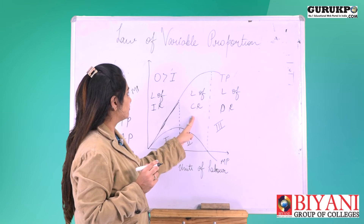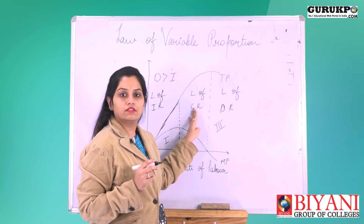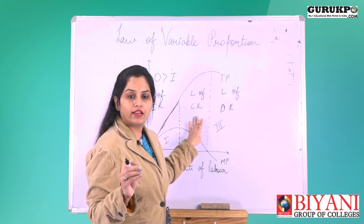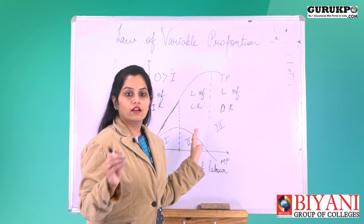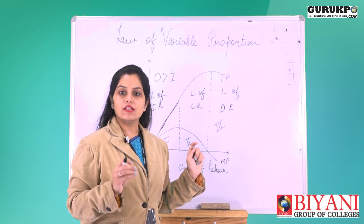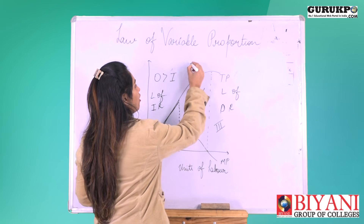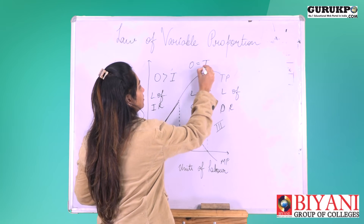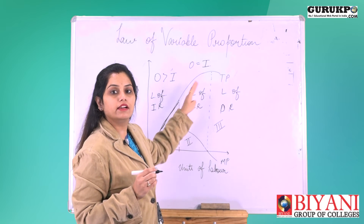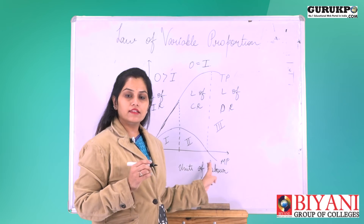In stage two, the law of constant returns, we keep some factors fixed and the rest variable. The change in output is equal to the change in input. In this stage, TP increases but at a decreasing rate, and MP starts declining.